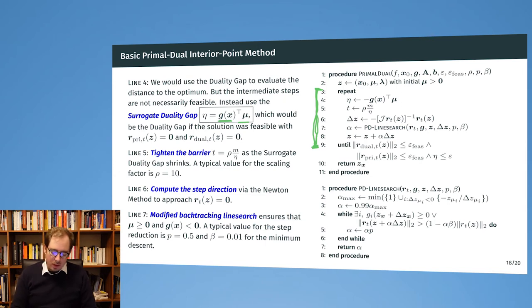We compute here the surrogate duality gap eta in line four. Next, we tighten the barrier—the closer the surrogate duality gap gets, the larger we make the barrier. We have some additional scaling factor here, rho, typically chosen as 10 but it depends on the problem. Here we are updating the t value for this barrier.